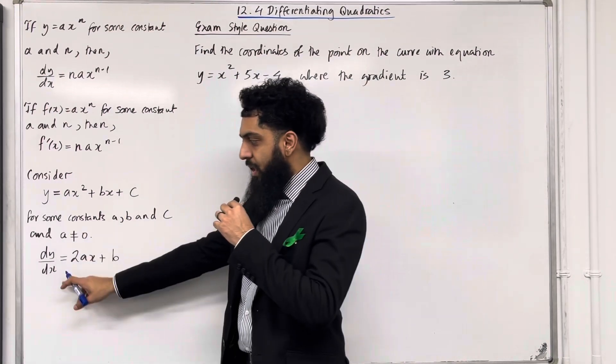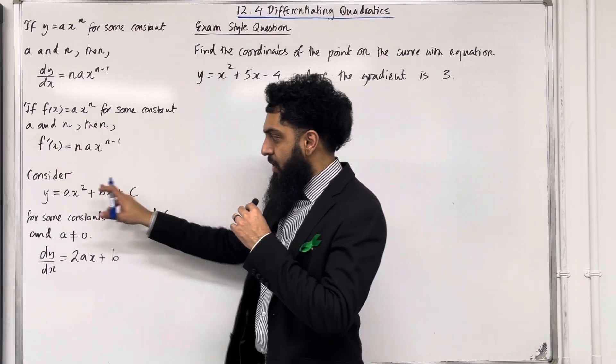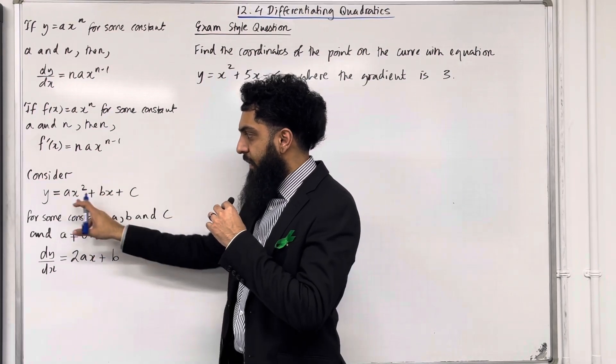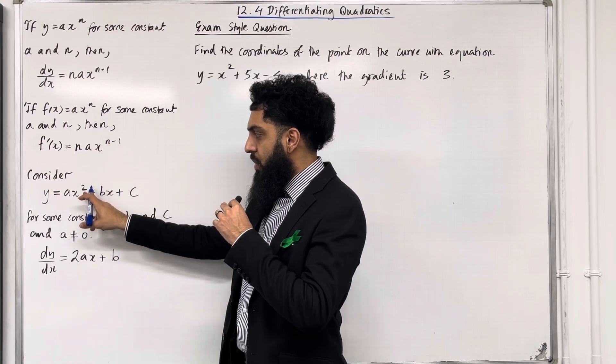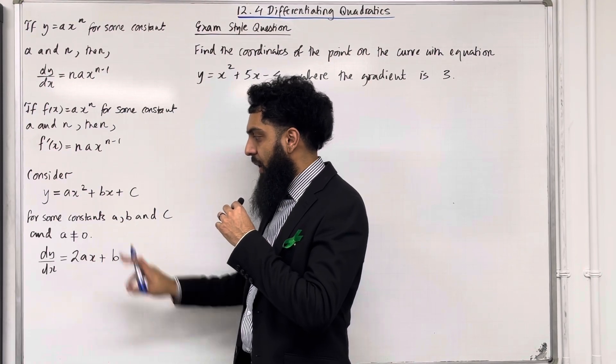Now, dy by dx, the gradient function, is given by differentiating term by term. So if we start off with the first term, we can bring down the 2. So we've got 2ax to the power 2 take away 1, which is 1. You don't need to write 1 there.